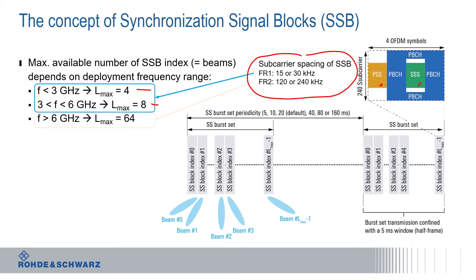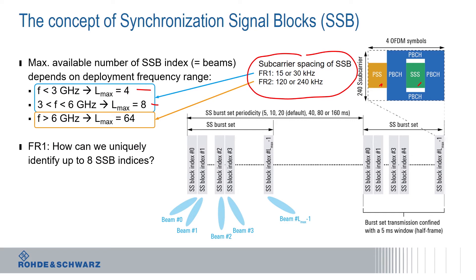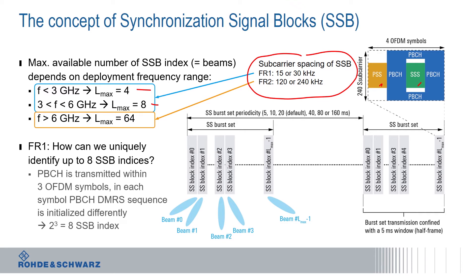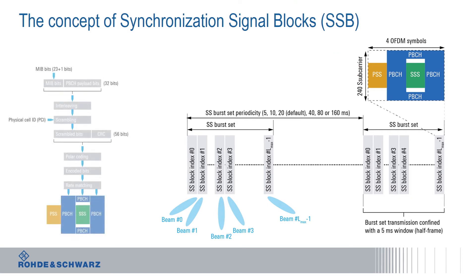A question we typically get is: how can we uniquely identify up to 8 of these SSB indices? For frequency range 1, that is simply based on the PBCH DMRS — the demodulation reference signals embedded in the PBCH symbols. With each of the 3 symbols the DMRS sequence is initialized differently, giving 3 opportunities, which allows us to encode 8 SSB indices for FR1. The question is then: what about FR2? As noted earlier, up to 64 different indices are possible, and to determine that we need channel decoding capabilities within our network scanner, otherwise you would not be able to determine the SSB indices.